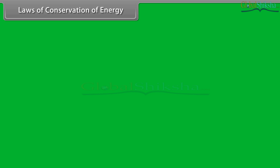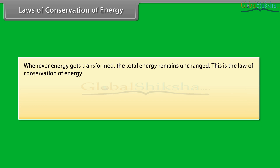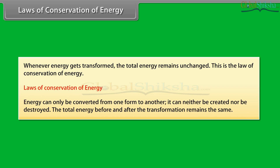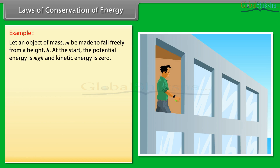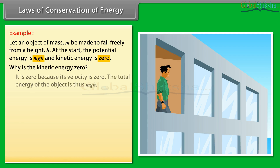Laws of conservation of energy. We now know that the form of energy can be changed from one form to another. Whenever energy gets transformed, the total energy remains unchanged. This is the law of conservation of energy. According to this law, energy can only be converted from one form to another; it can neither be created nor destroyed. The total energy before and after the transformation remains the same. Let an object of mass M fall freely from a height H. At the start, the potential energy is MgH and kinetic energy is zero, because its velocity is zero. The total energy of the object is thus MgH.